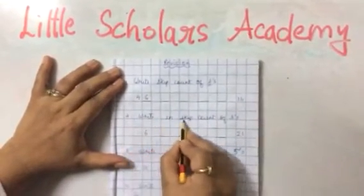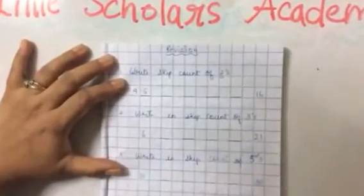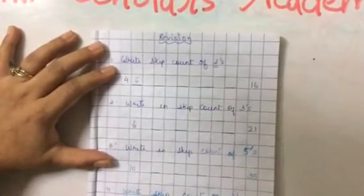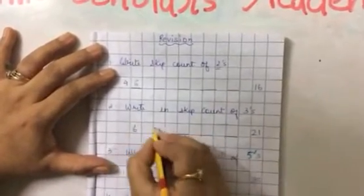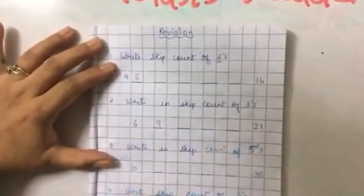Second question. Write and skip count of threes. Abhi yaaha peh humn three numbers ko skip kerenge. Six. Six ke baad agar hamn three numbers skip ker rahe hain. Toh next number kya aayega? Correct. Nine. Aaisi karke aaghe likhho. Phir ye blank fill kerou.